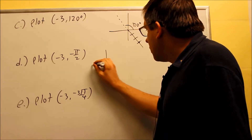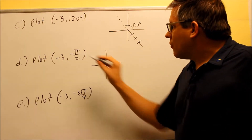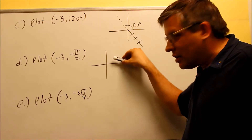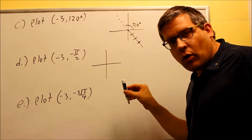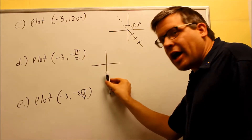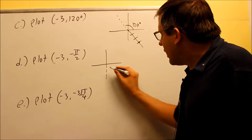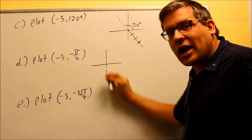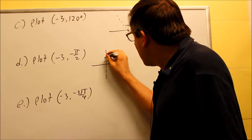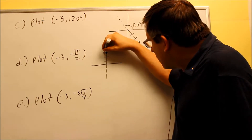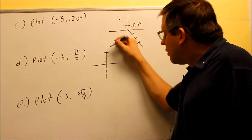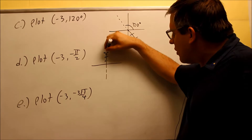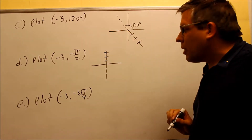You draw that out with a dotted line — negative means reverse it exactly 180 degrees in the other direction. For this one, negative π/2 is the same thing as negative 90 degrees. I would begin by going down this way. For negative angles, remember you've got to go clockwise. So I go down negative 90 with a dotted line, then I reverse it exactly 180 degrees in the other direction and count three going up. The dot actually ends up on the y-axis — I count three places up, and that's where the point ends up.